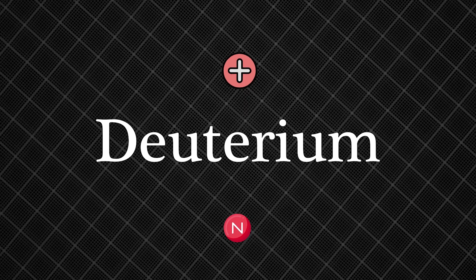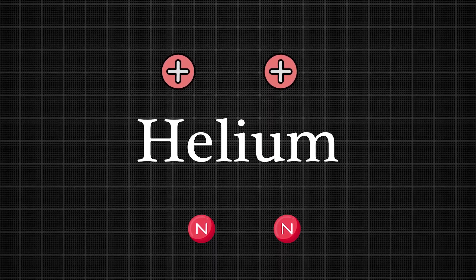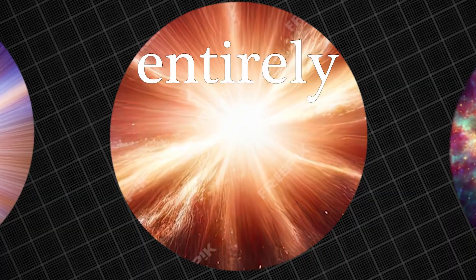As the process continued, deuterium nuclei fused to form helium, the second element, consisting of two protons and two neutrons. But the Big Bang only created the lightest elements. Inside stars, something entirely different happens.